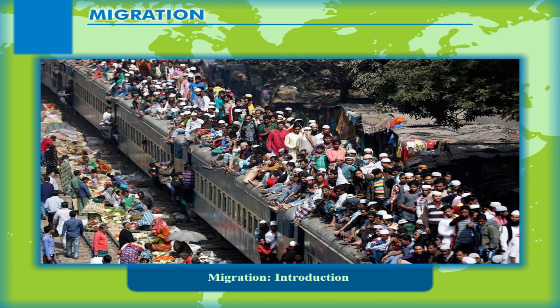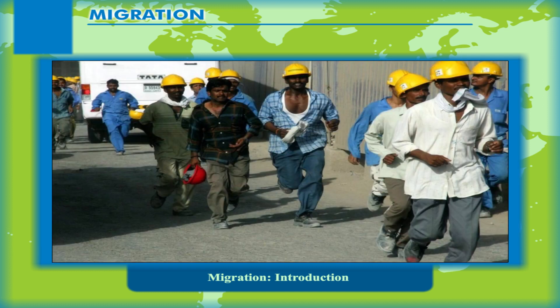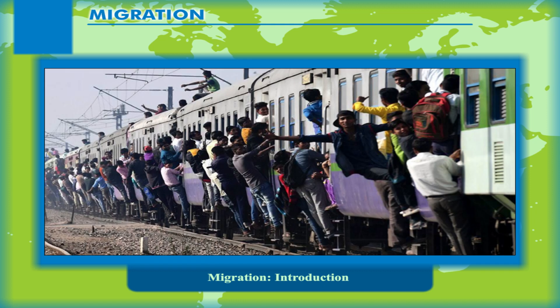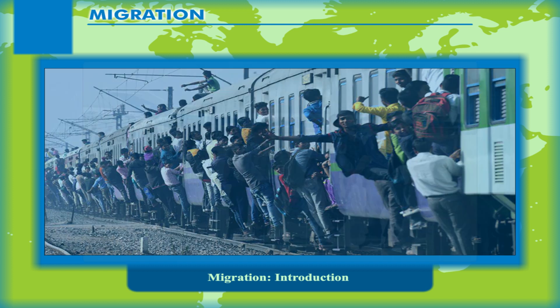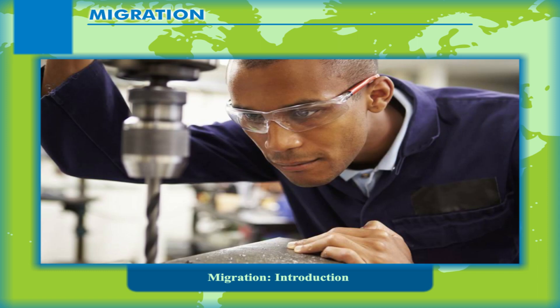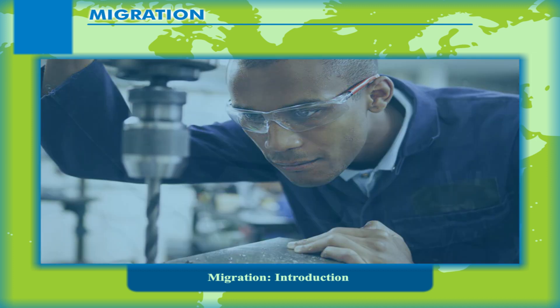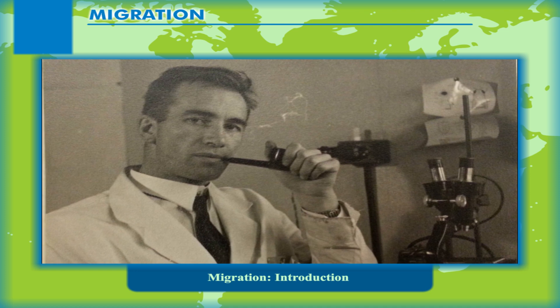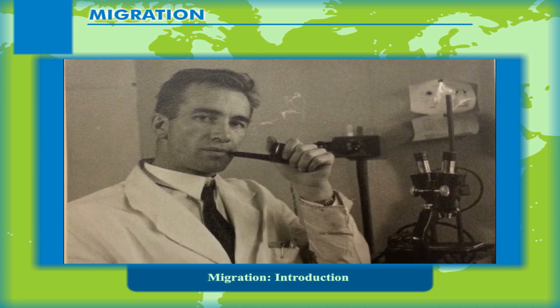Interstate migrations associated with mass recruitment of cheap manpower, primarily in China and India, for work on foreign plantations in Southeast Asia and in East Africa, became important in Asia during the first quarter of the 20th century. A unique migration known as the brain drain, which is associated with the luring of highly skilled specialists from one country to another, began in the 1930s when the USA had a monopoly on the opportunity to select refugee scientists from fascist Germany.